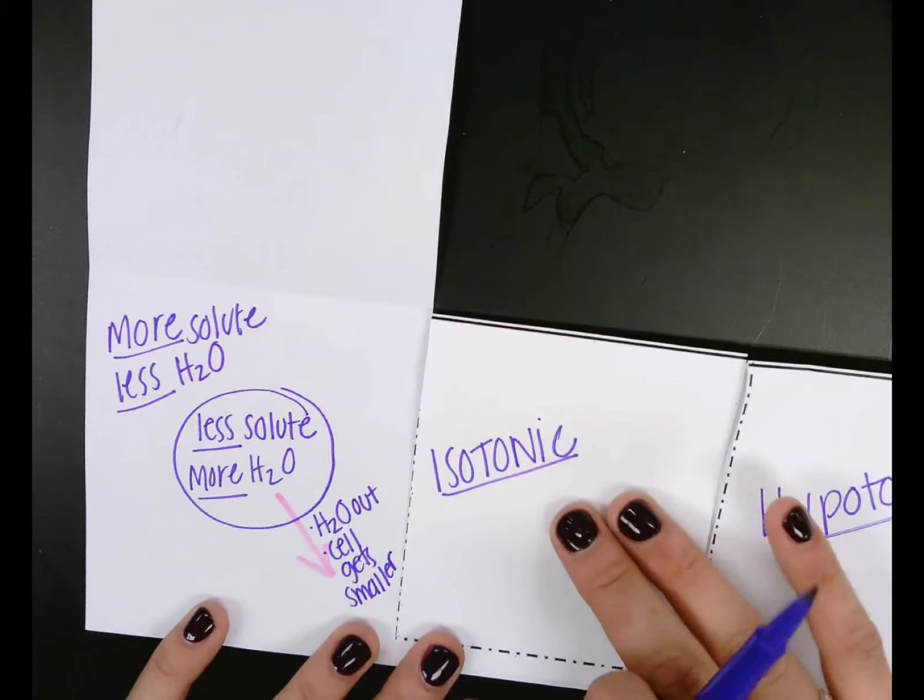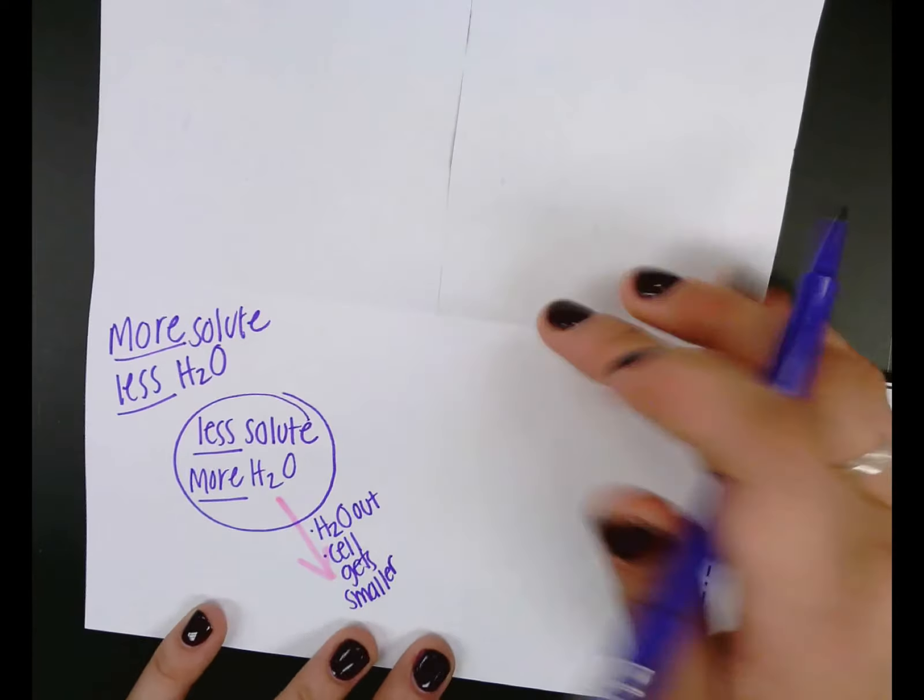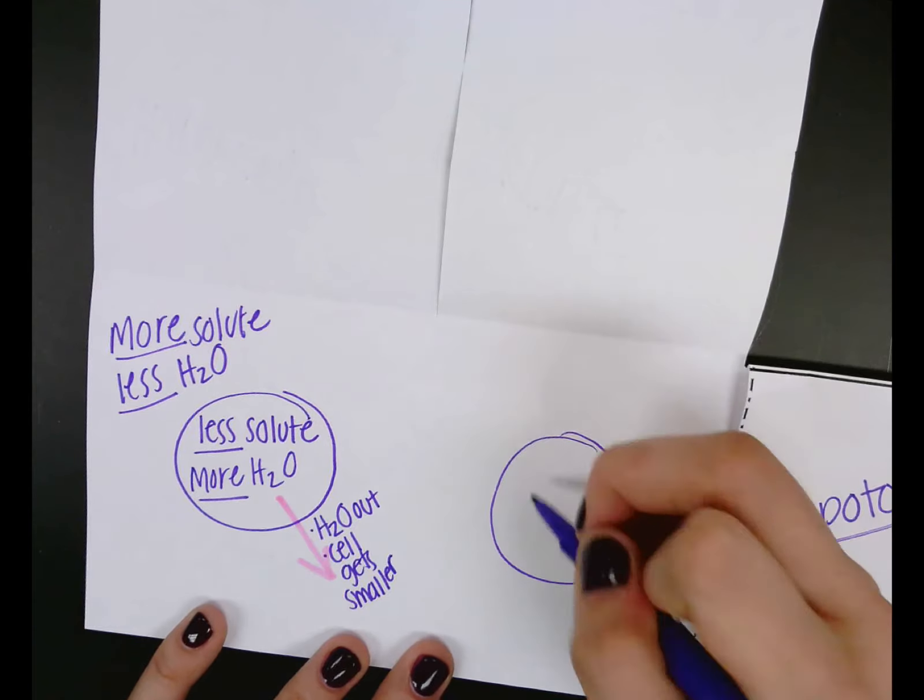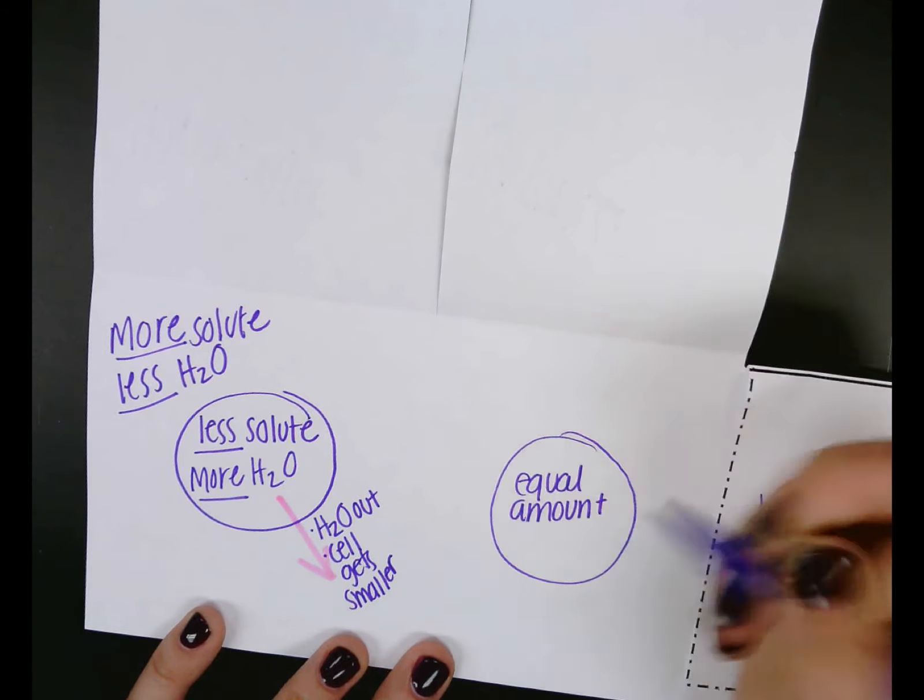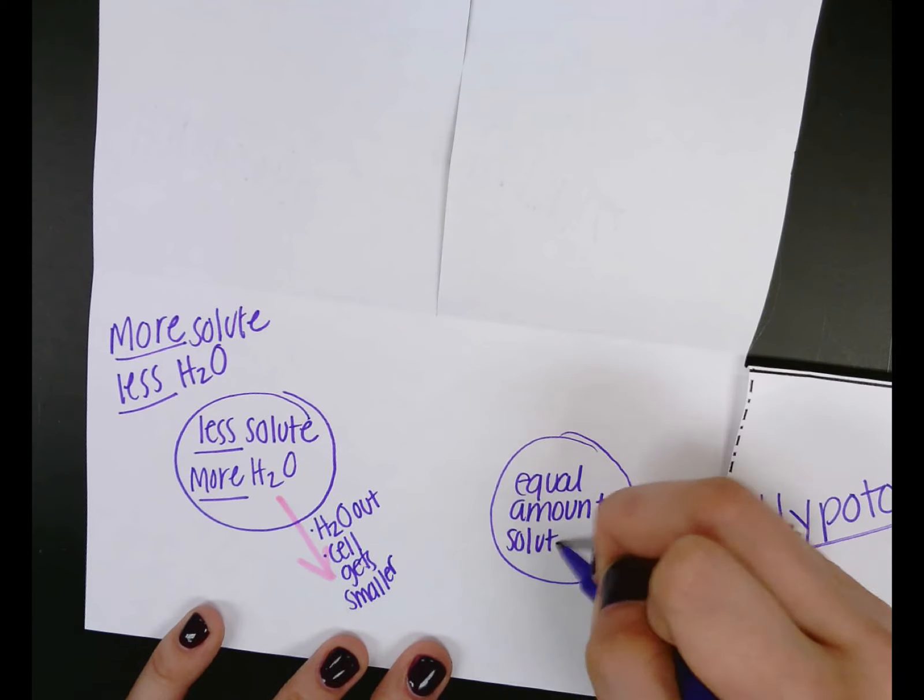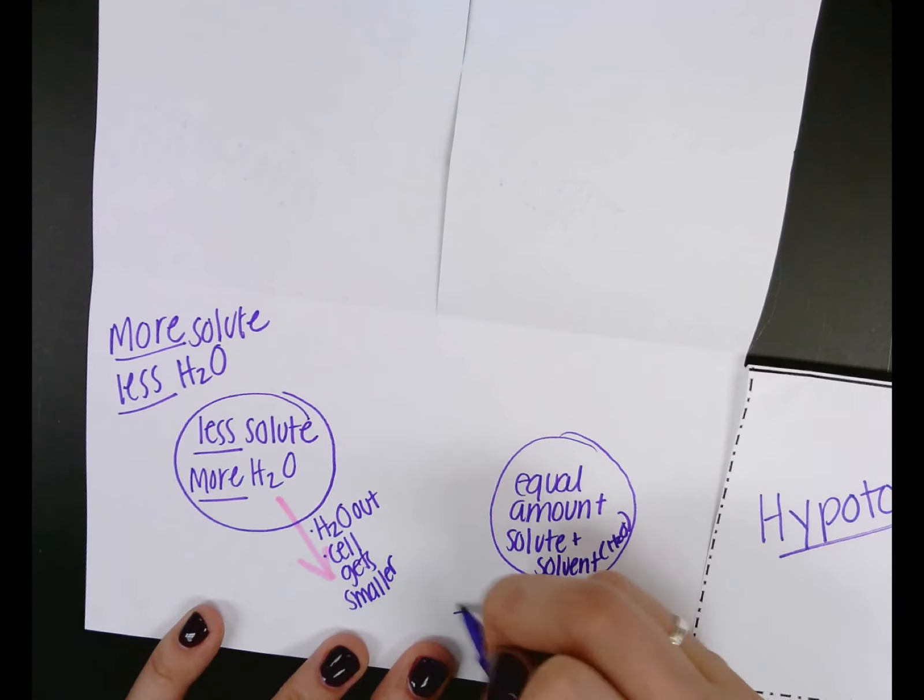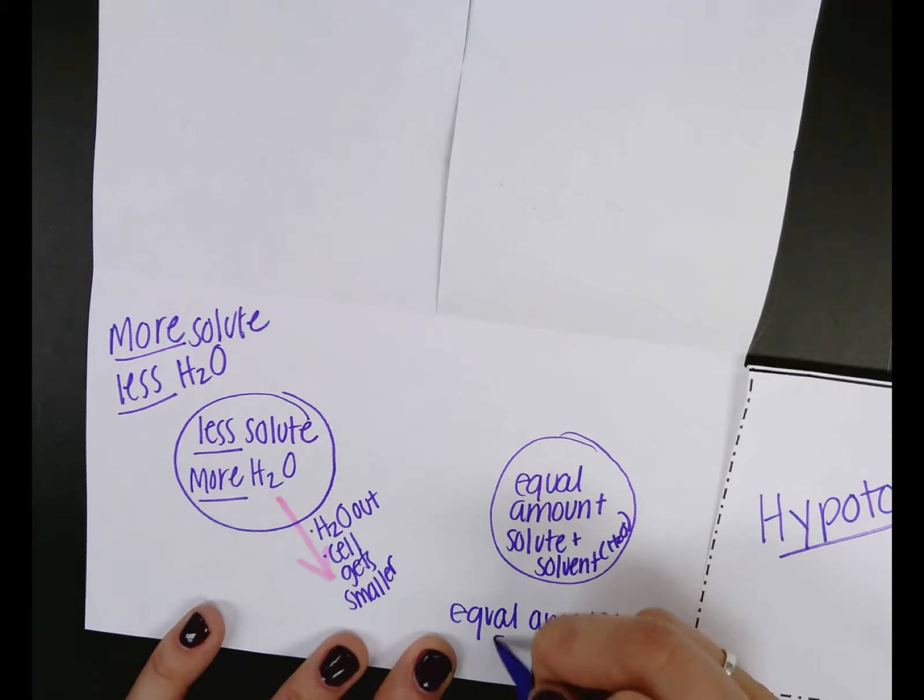For isotonic, it's very different, because when you have a cell, it has an equal amount or concentration of both solute and solvent or water. So on the outside, we've got the exact same amount, equal amount or concentration of solute and water.